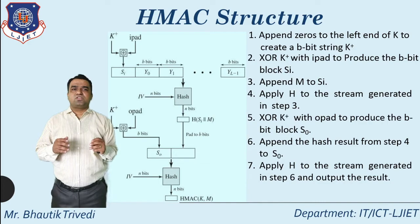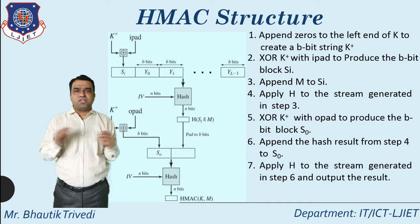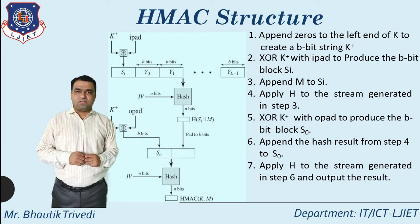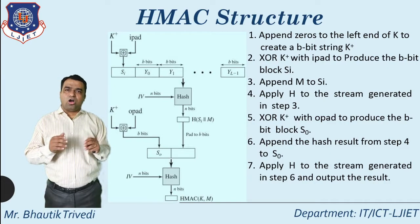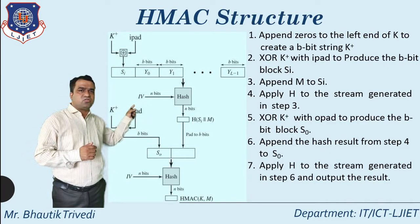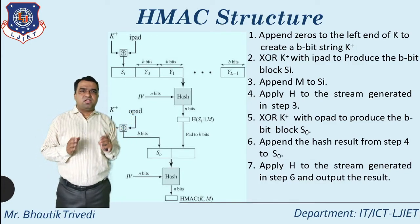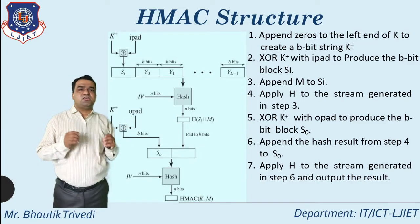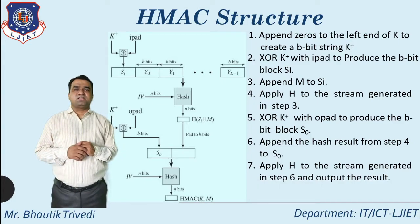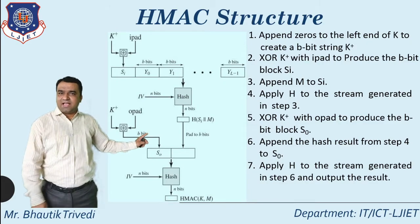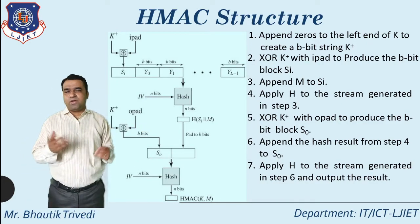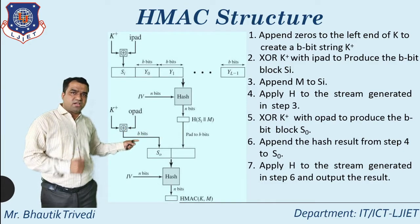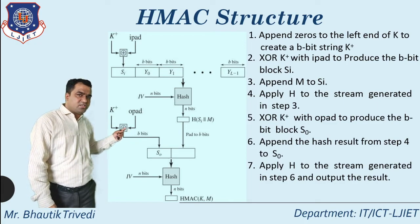Step four: apply hash H to the stream generated in step three, using the initial value IV. This generates an n-bit result — H(Si concatenated M). Whatever you generate is the hash result. Step five: again apply XOR between K+ and opad, appending K+ and generating K+ with opad, applying XOR to get So.